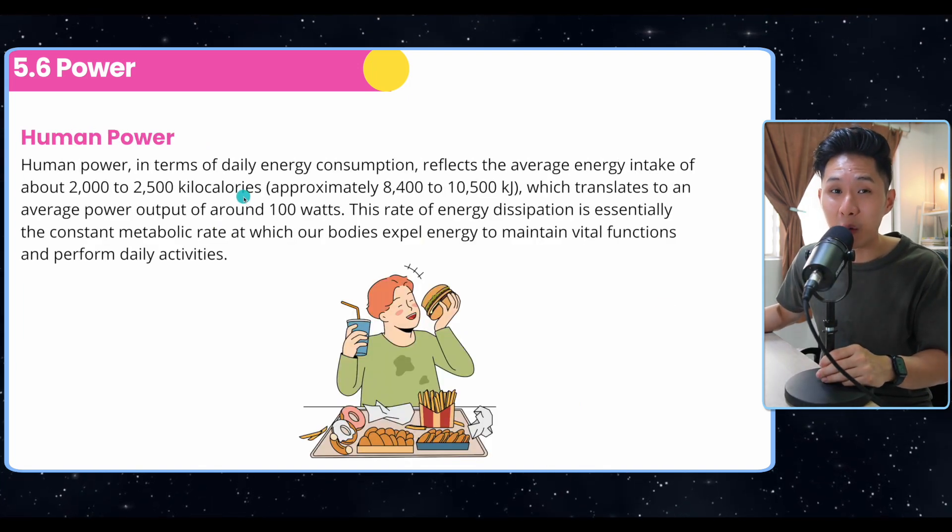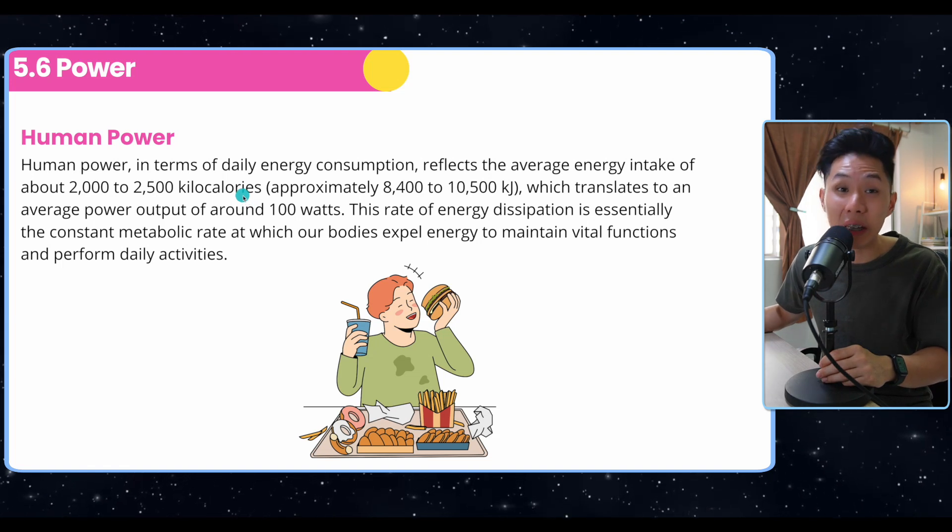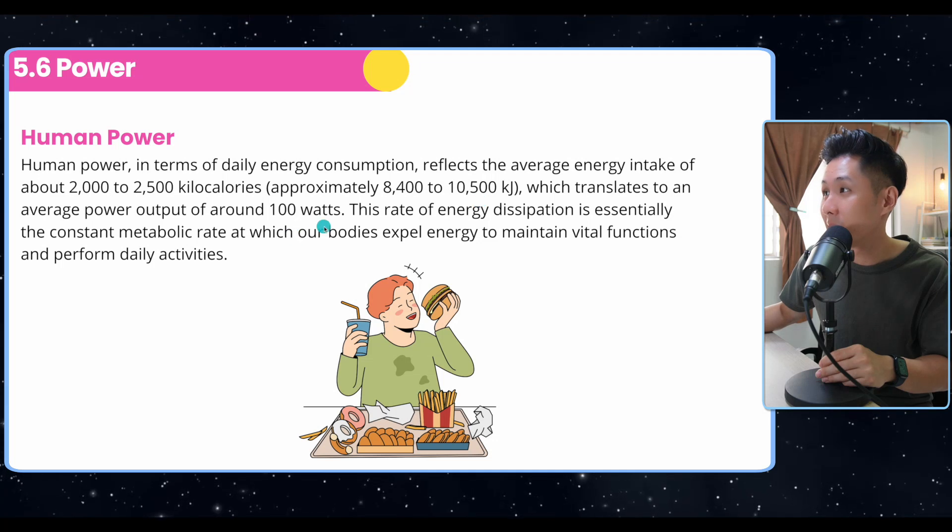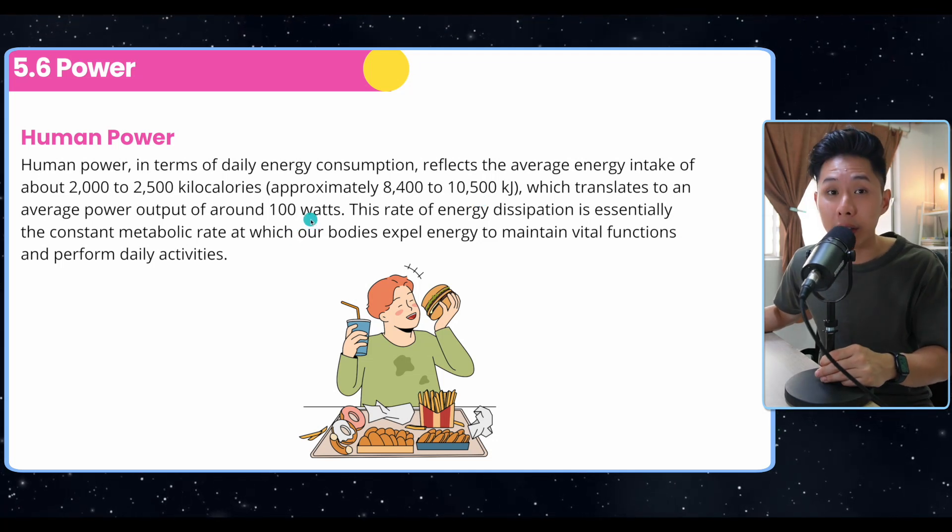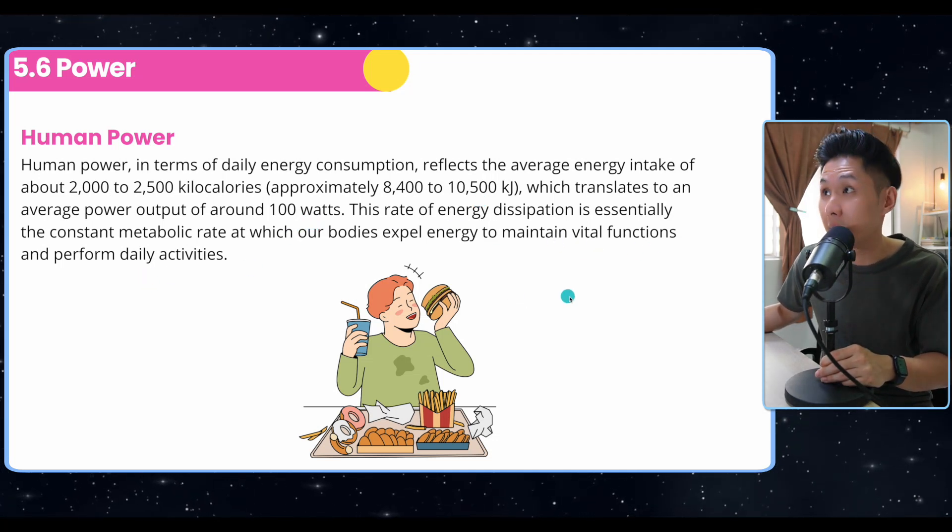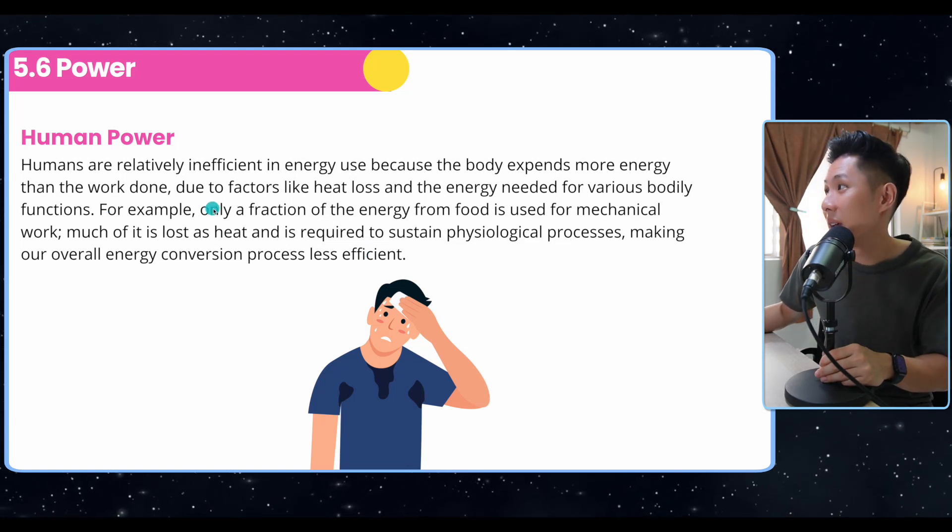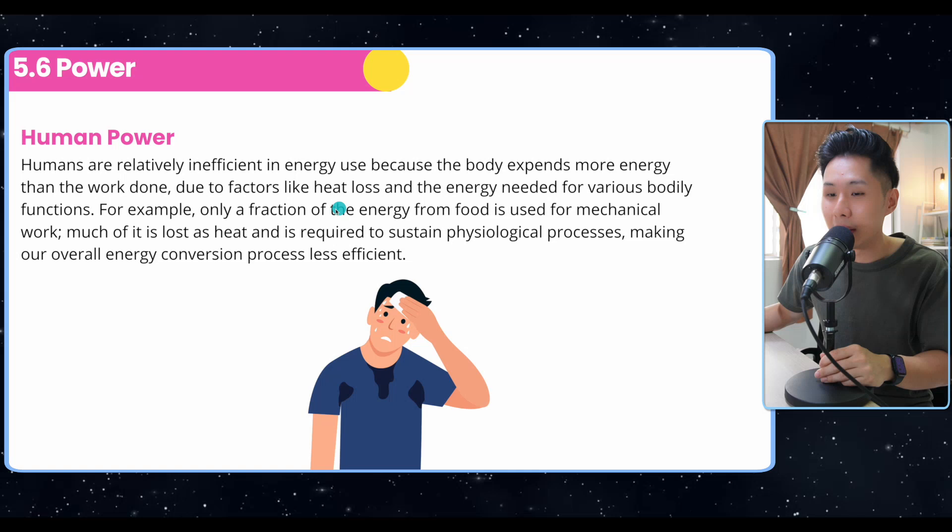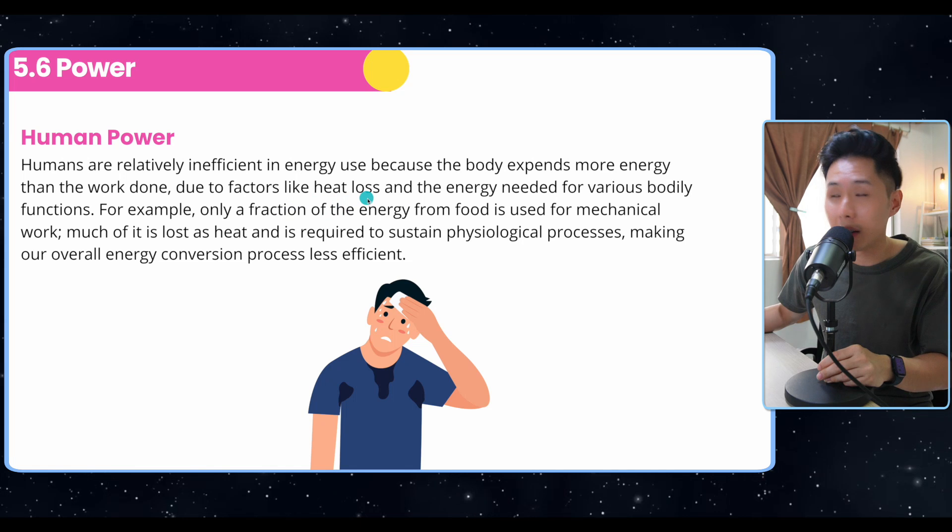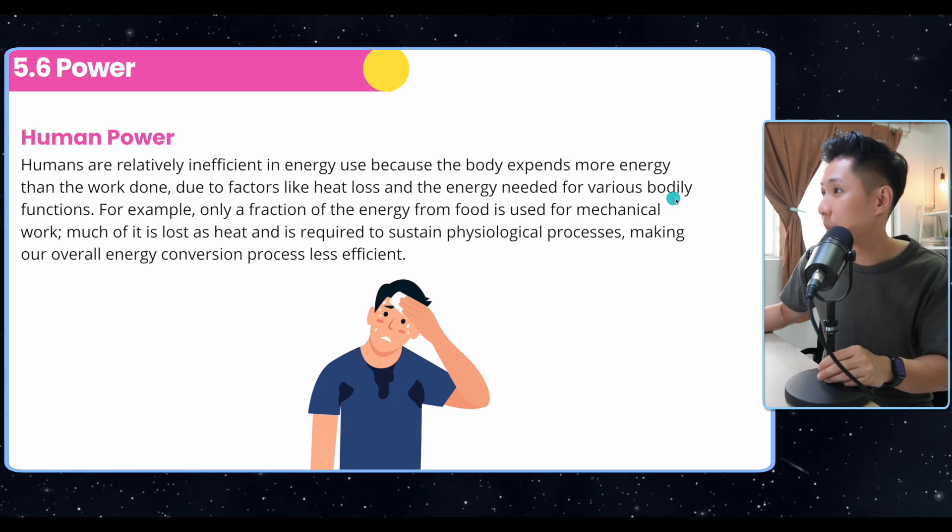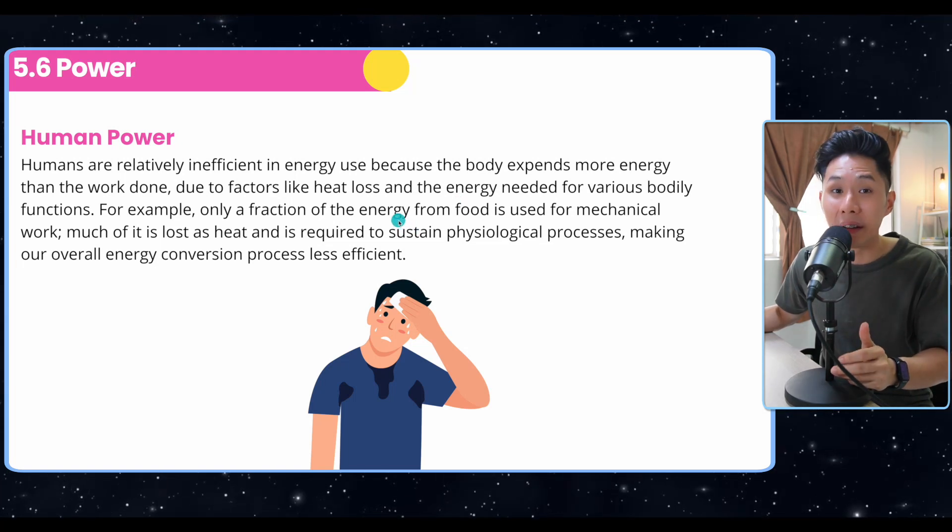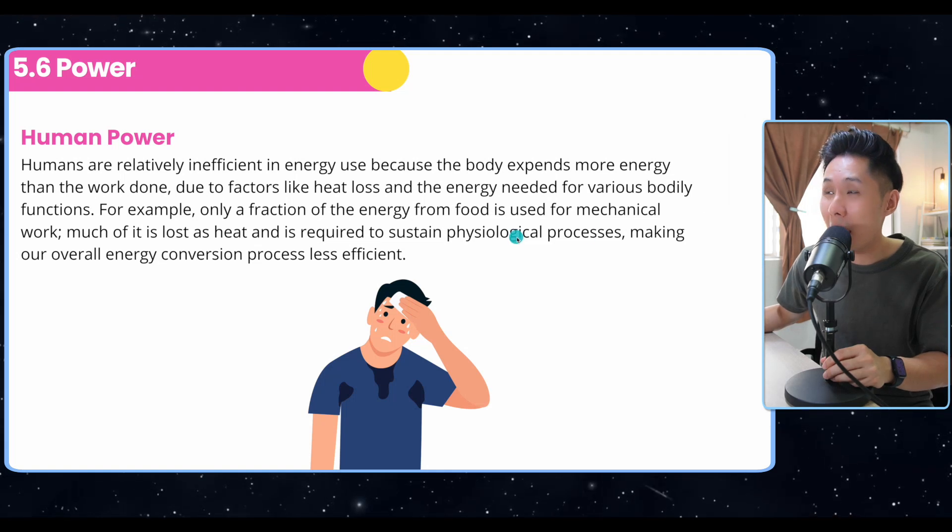So there's another concept called human power, which is the amount of energy that we humans need, which is around 8.4k to 10.5k joules, which converts to around 100 watts. So this energy helps us maintain vital functions and perform daily activities. And human power is relatively inefficient, because we actually lose more energy than we do work. So because of factors like heat loss and energy needed for various bodily functions. So in short, just to say that we humans are not very effective species.